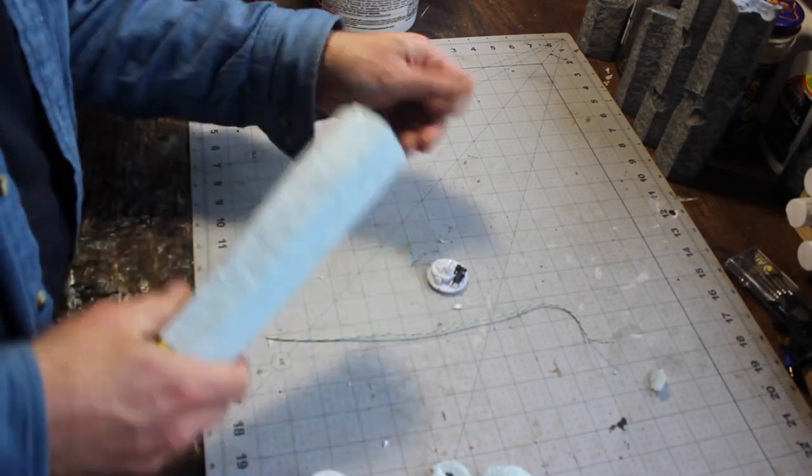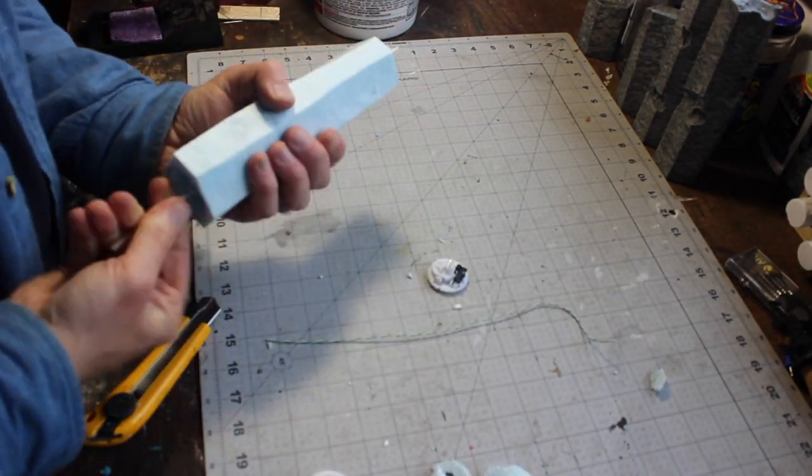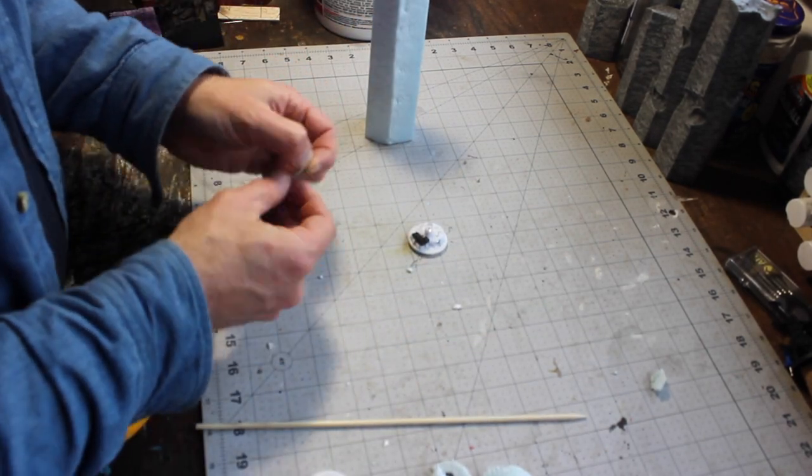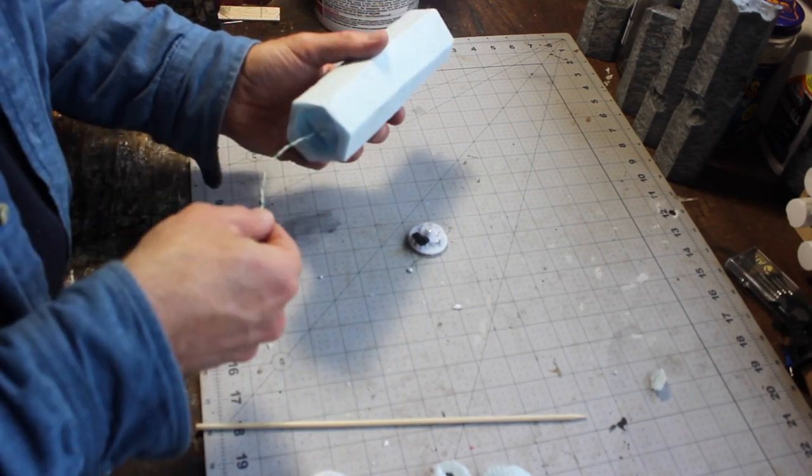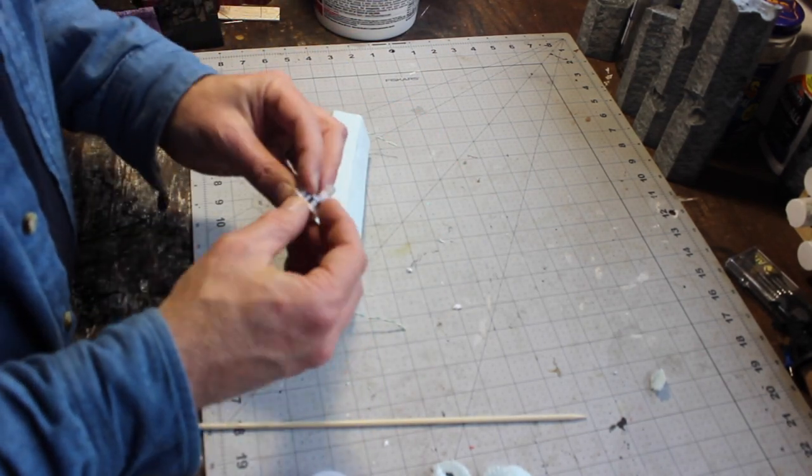The next step is to puncture a hole all the way through the center of the column with a skewer. This is where the wire will bring electricity from the battery and switch up to the LED. I'm using the same LED as came in the tea light.